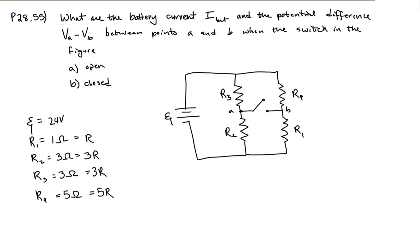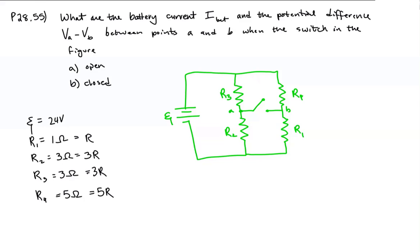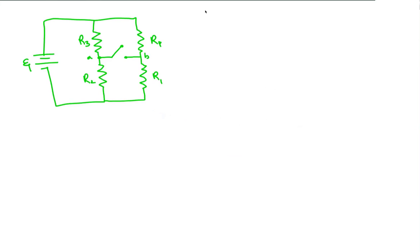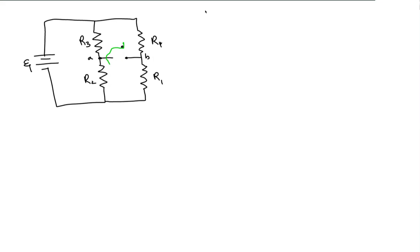The problem asks us to find the current generated by the battery and the potential difference between points A and B when the switch is open and when it's closed. I'm going to start by looking at the case when the switch is open. Taking our circuit, we'll proceed with it on the next page.